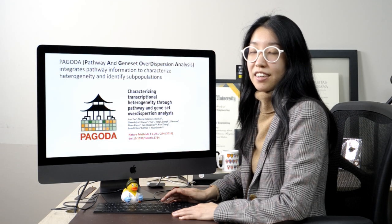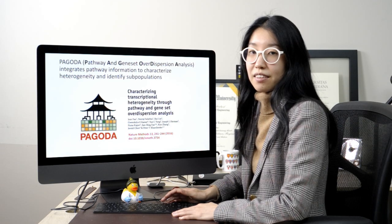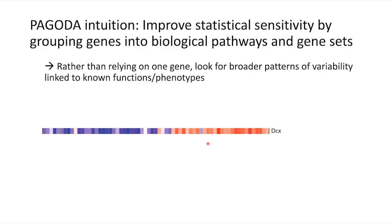PAGODA further integrates prior knowledge regarding biological pathways in order to characterize transcriptional heterogeneity and identify transcriptionally distinct cell populations in our single-cell RNA sequencing data. The general intuition behind PAGODA is that we can improve statistical sensitivity by grouping genes into biological pathways and gene sets. For example, consider the expression of one gene, DCX, which happens to be a neuronal maturation marker.